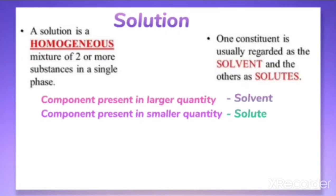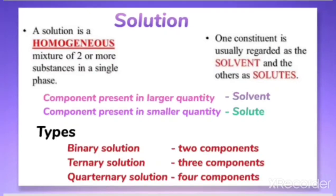Solutions containing two components are called binary solutions, those containing three components are called ternary solutions, and four-component solutions are called quaternary solutions. For simplicity, we will consider only binary solutions, in which the component present in the larger quantity is the solvent and the component in the smaller quantity is the solute.